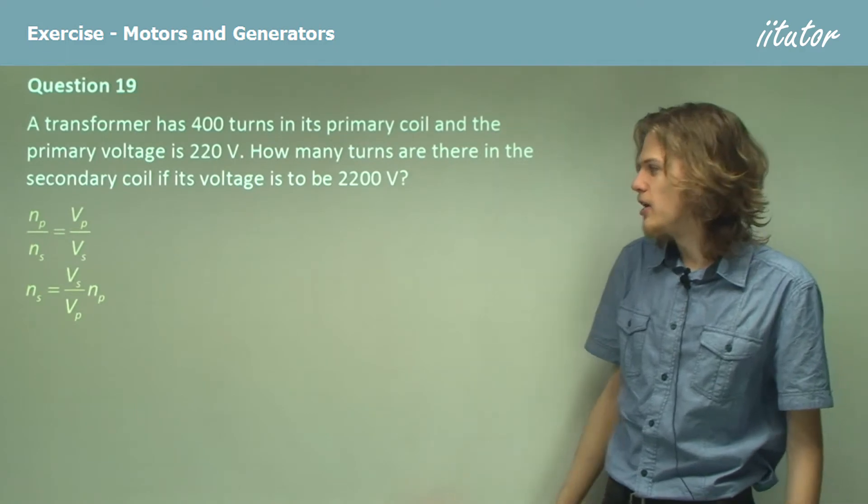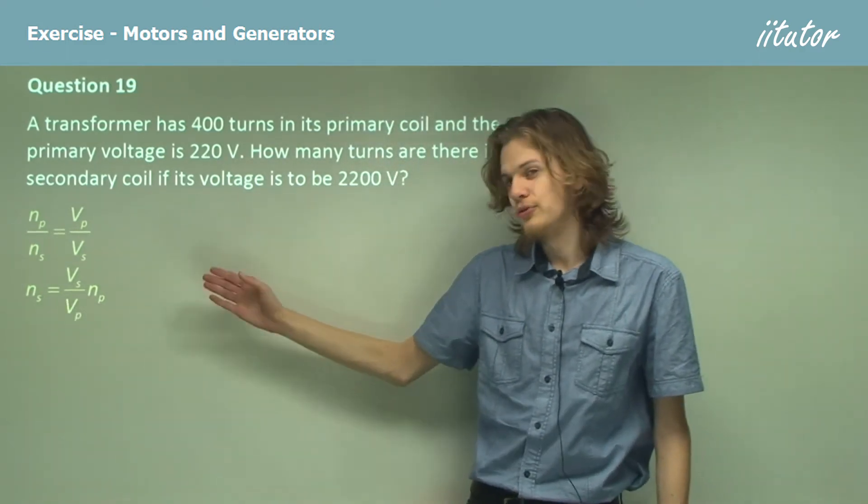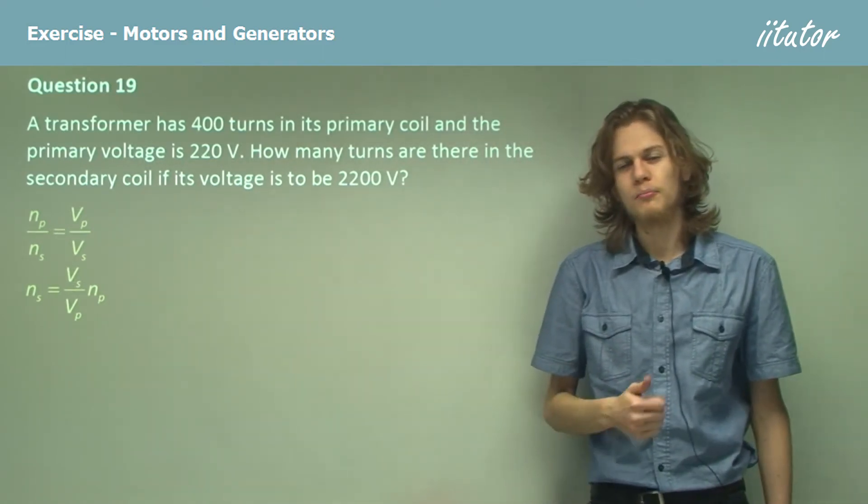Rearranging the equation, we have the number of turns in the secondary coil equals the ratio of voltage from secondary to primary times the number of coils in the primary.